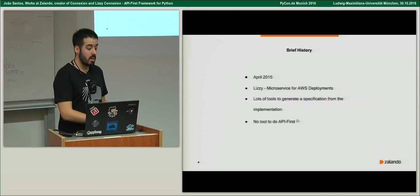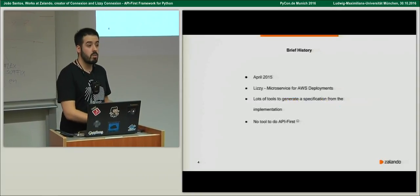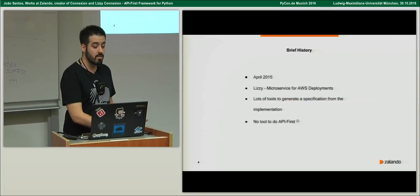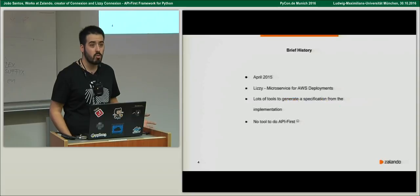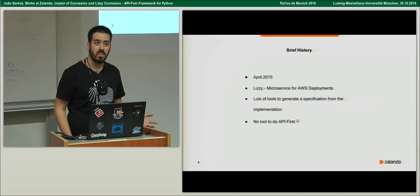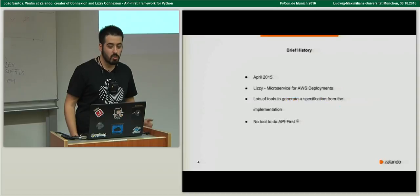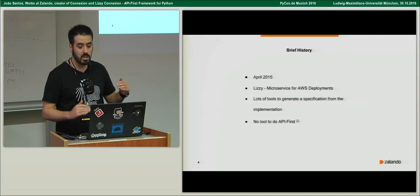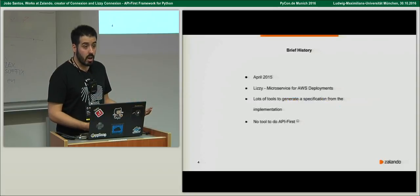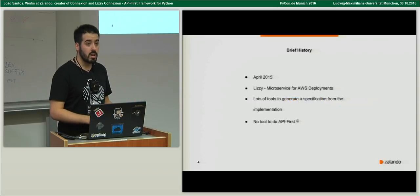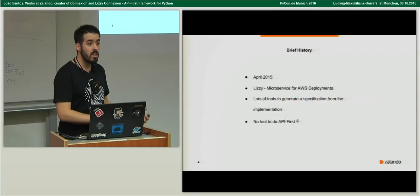This meant that I did the API definition first with YAML. How many of you know about Swagger and OpenAPI? The others should look at it because it's really cool. The idea is that you create a YAML file documenting your API, and you can even give some examples of what you expect to receive and what you will return.